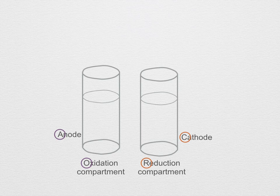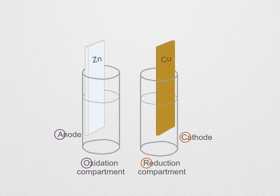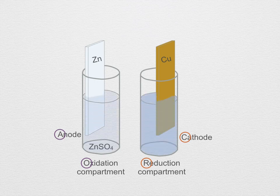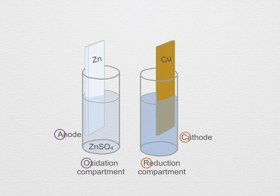An example of such a cell is what we saw earlier involving zinc and copper. Both compartments have a piece of the respective metal, and then each compartment is also filled with an aqueous solution of the associated ion. Very often the solution is made up of a salt with a counter ion that allows the salt to dissolve completely.